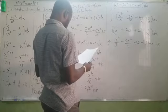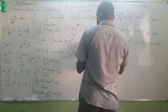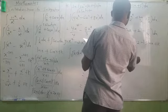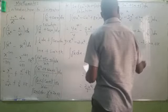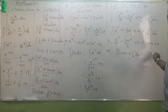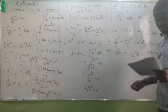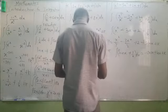Problem: evaluate the integral of (sin x + 1 + 1/x) dx. This gives −cos x + x + ln|x| + k. That is the answer, using standard integral results covered earlier.